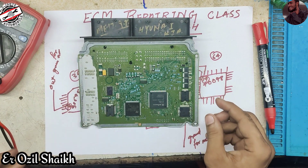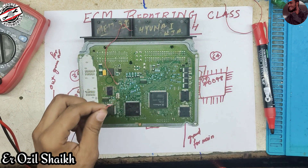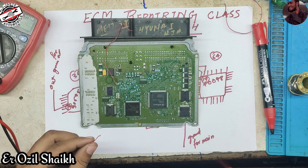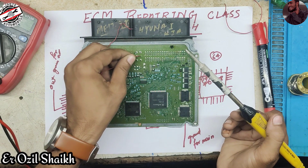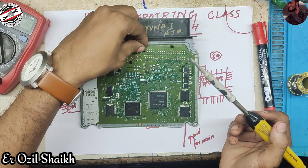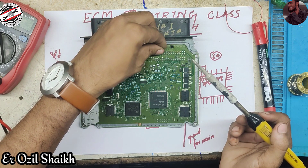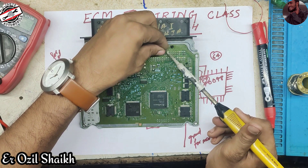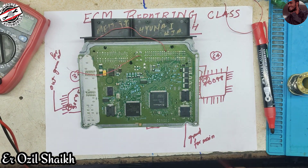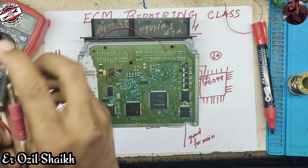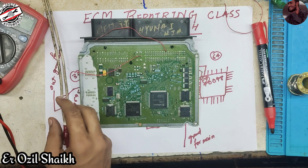I'll connect two wires — one for ground and one for ignition. Pins 3 and 4 are ground, and counting from pin 1: seven, eight, nine, ten, eleven, twelve, thirteen, fourteen, fifteen, sixteen, seventeen, and eighteen — pin 18 is our ignition. I have connected it. Now I am going to connect the 12 volt supply.